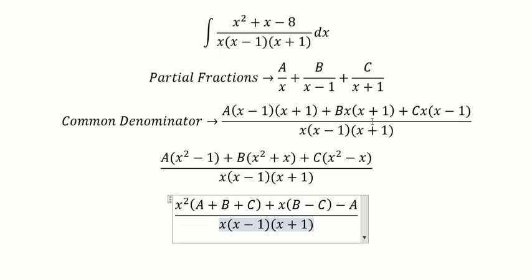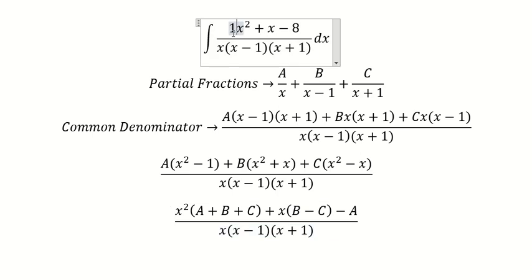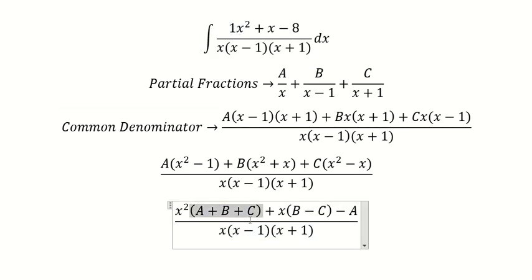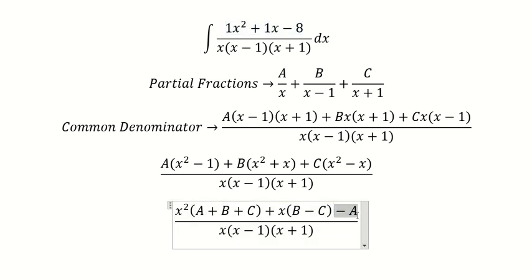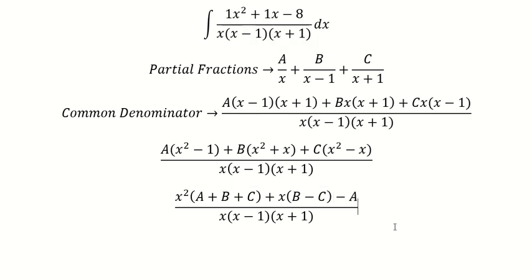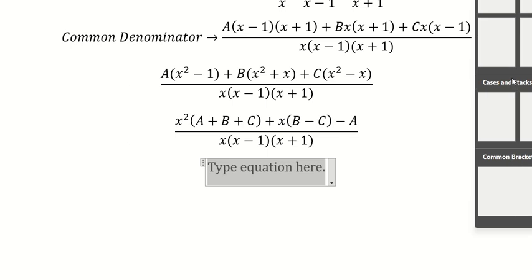Now we need to arrange based on the coefficients. For x squared, the coefficient is 0, so A plus B plus C equals 0. Wait — here we have coefficient 1, so A plus B plus C equals 1. We have B minus C equals 1. And negative A equals negative 8. So we create the system of equations.